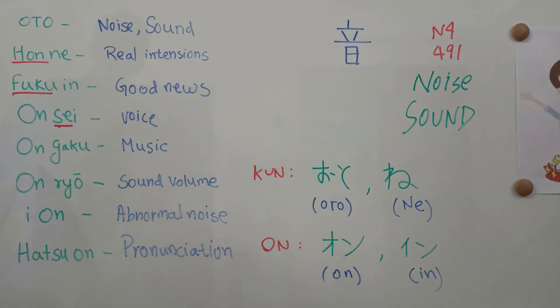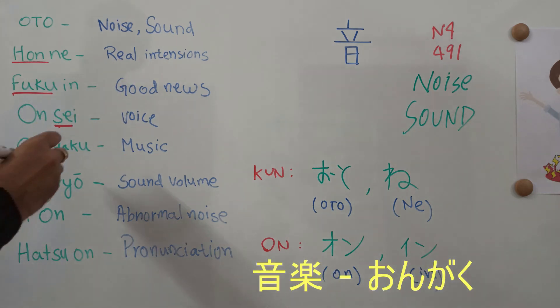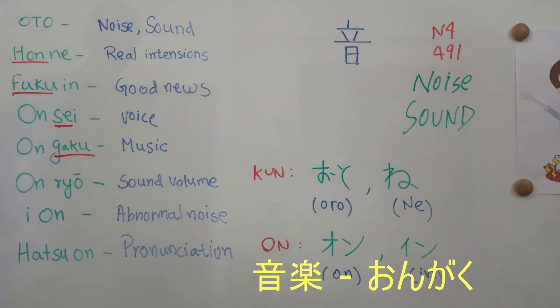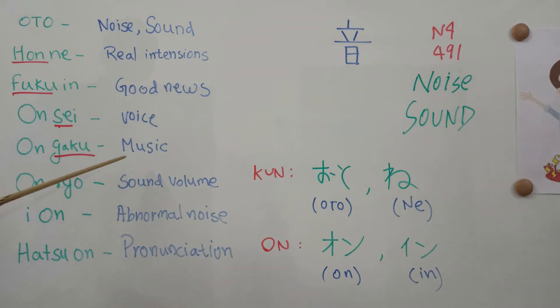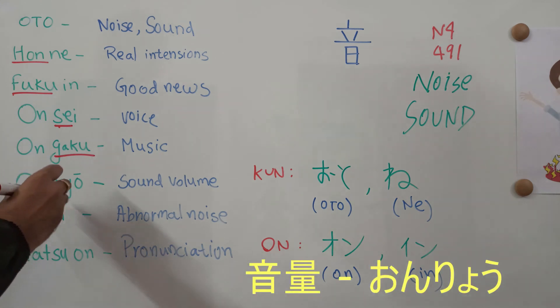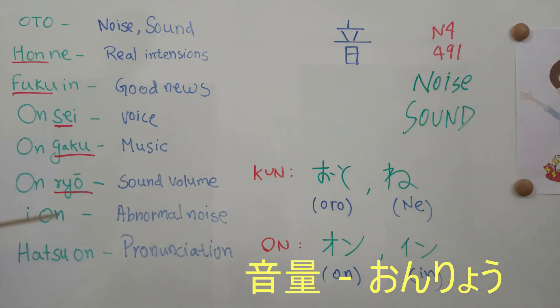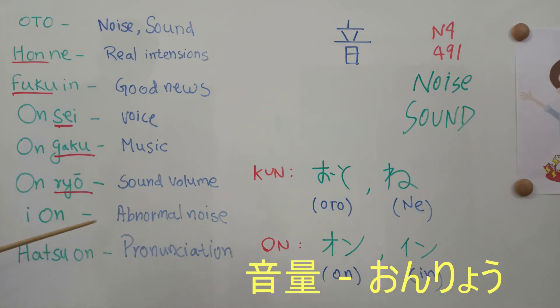The next word is 'Ongaku' — here 'Gaku' means something pleasant, like music. So 'Ongaku' means music. The next word is 'Onryō' — here 'Ryō' means volume. So 'Onryō' refers to the volume of sound, or sound volume.